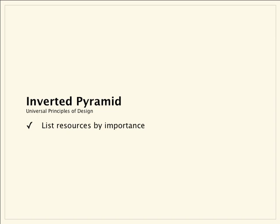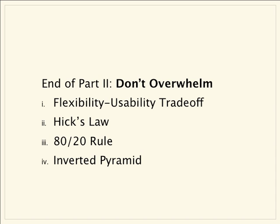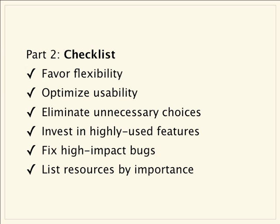Knowing that a developer approaching a new API has to discern which resources are most important, we can use the inverted pyramid principle to present information in a way that communicates the relative importance of our API's components. That wraps up our second session. By being careful not to overwhelm our developers or ourselves, we added six tangible actions: favor flexibility, optimize usability, eliminate unnecessary choices, invest in highly used features, fix the high impact bugs — both driven by API analytics — and list our API resources in order of importance.